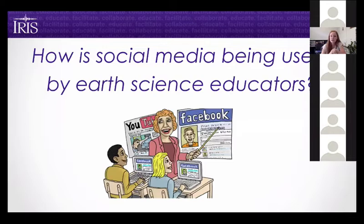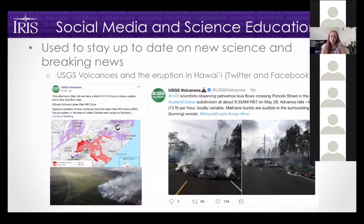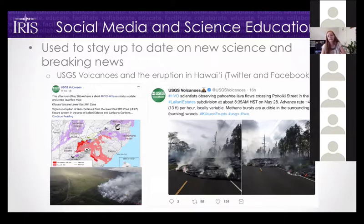How is social media being used by earth science educators? There are so many uses we can only cover highlights. Social media is often used to stay up to date on new science and breaking news. A great example is the eruption at Kilauea — the USGS has been doing an excellent job communicating not only the science of what's happening and why, but staying up to date with incoming data, what it means, and coordinating with emergency personnel. They're doing much of this communication in real time on social media.